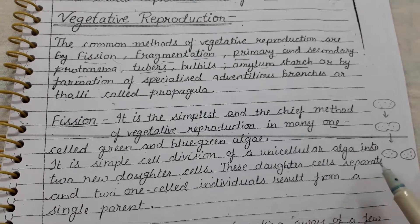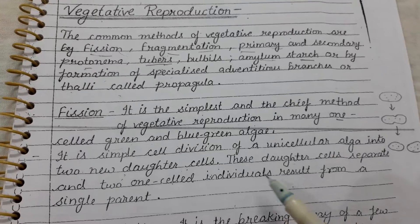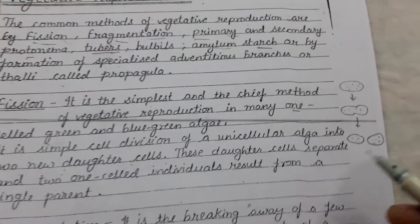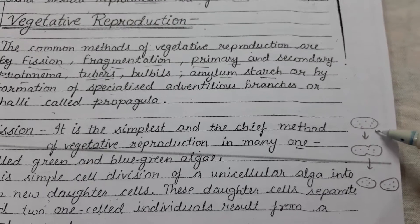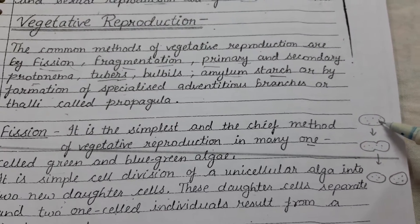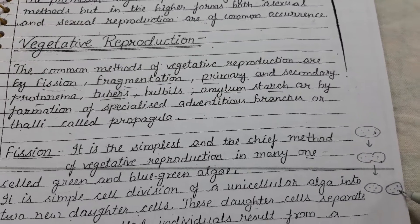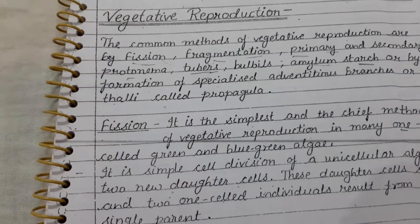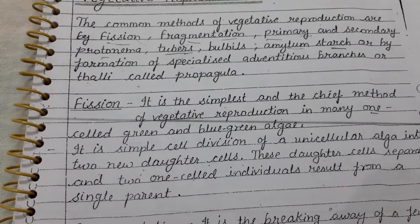These daughter cells separate, and two single-celled individuals result from a single parent. In this diagram, you can see it is a single parent cell. By fission, it separates into two new single cells. It is a very common and simplest type of vegetative reproduction found in algae.